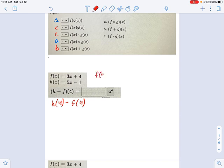So if I do f of 4 up here, what that means is 3 times 4 plus 4, which if you do a little algebra comes out to 16. And if I do h of 4, that is 5 times 4. Remember, 4 replaces the x minus 1, and that's 19.